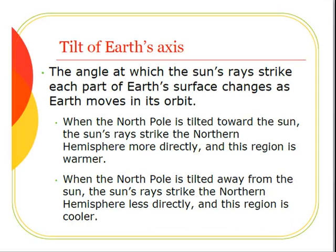The angle at which the Sun's rays strike each part of Earth's surface changes as Earth moves in its orbit. When the North Pole is tilted toward the Sun, the Sun's rays strike the Northern Hemisphere more directly, and this region is warmer. When the North Pole is tilted away from the Sun, the Sun's rays strike the Northern Hemisphere less directly, and this region is cooler.